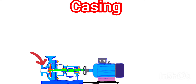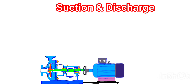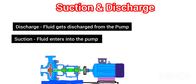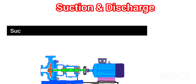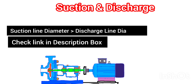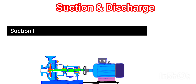The next component is the inlet and outlet of the pump — we call them the suction nozzle or suction side, and the discharge nozzle or discharge side of the centrifugal pump. From the suction nozzle, fluid enters into the casing or pump. From the discharge nozzle, fluid exits the pump or casing. We always design the suction size bigger than the discharge size — the main reason is to avoid cavitation. A link with more explanation is provided in the description box.